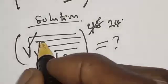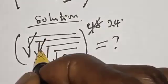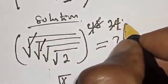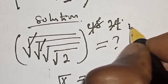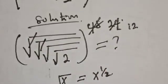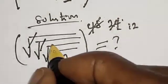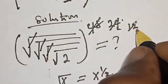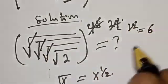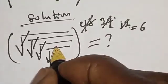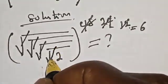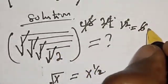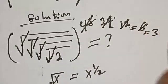If you cancel this and divide by 2, we have 12. Now if you cancel this and divide by 2, we have 6. Now if you cancel this and divide by 2, this is equal to 3.